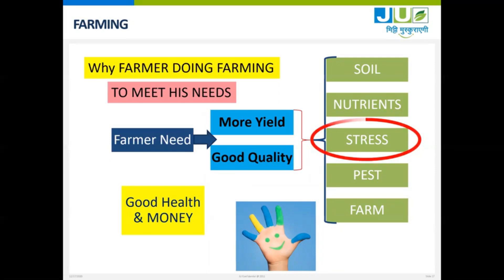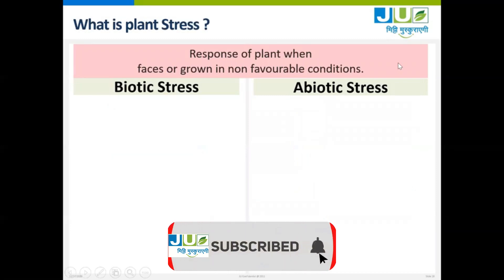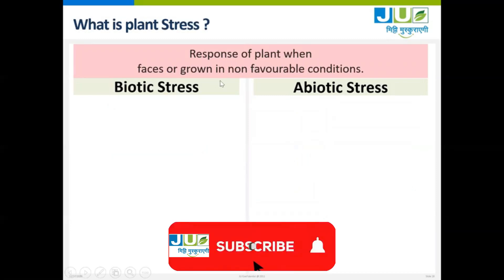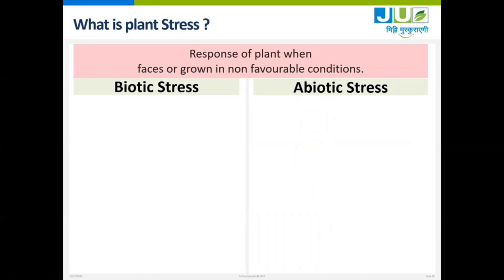First let us understand what is plant stress. It is the response of the plant when it is grown in non-favorable conditions or faces non-favorable conditions. It can be biotic and it can be abiotic.